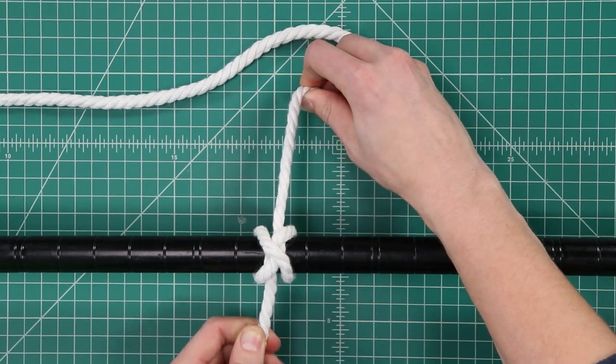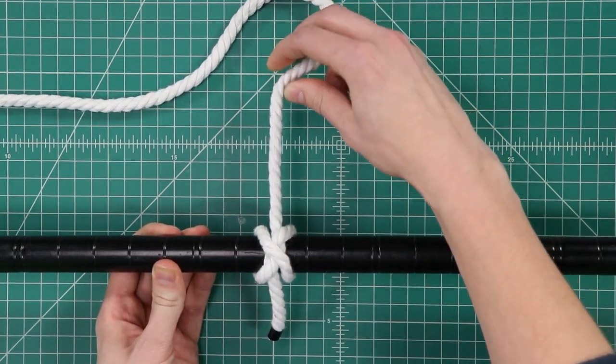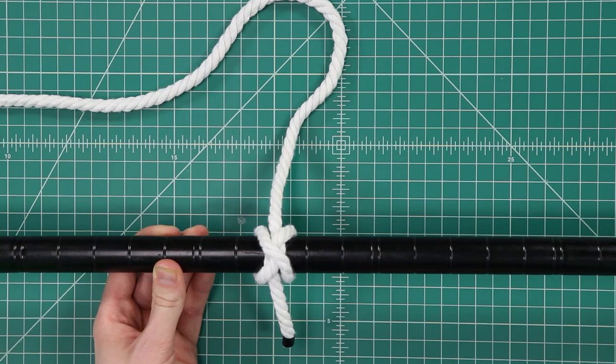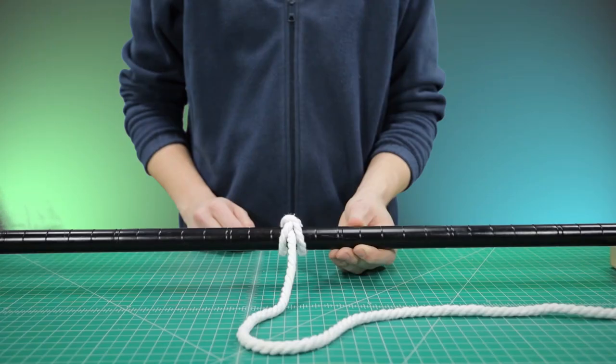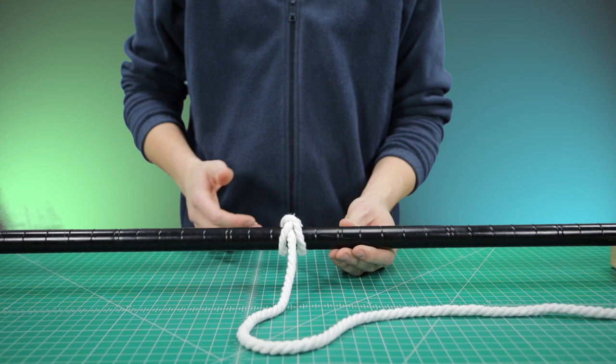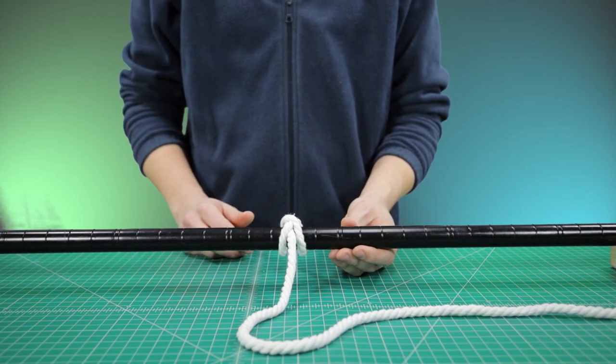Pull both ends to tighten, and we've got a secure knot that won't let loose when we pull on either end. This is a difficult knot to untie, so make sure you have it in the right place before you tighten it down.